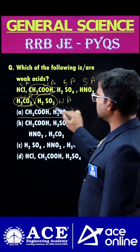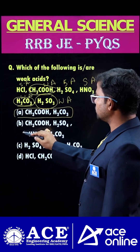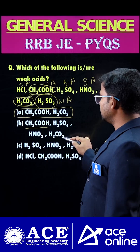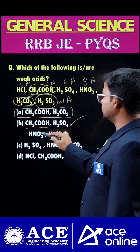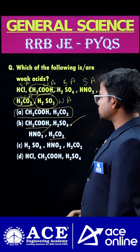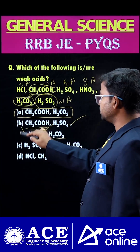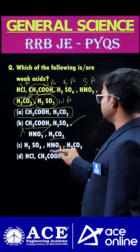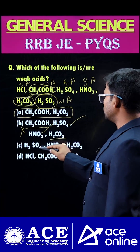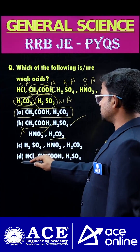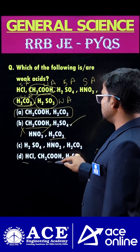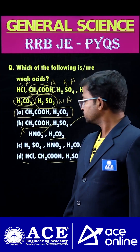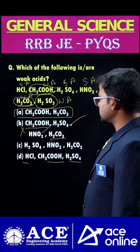Here option A is the correct one. Why? Because in option B, of course we have acetic acid and carbonic acid, but along with that, strong acids are also present — that is why B is not correct. Next, in option C, both strong and weak acids are present. In option D, same — both strong and weak acids exist.